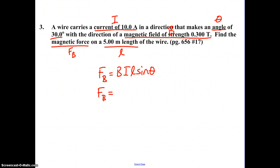So, we go ahead and we substitute B, 0.30, current, 10 amps, length, 5 meters, and the angle of orientation is 30 degrees. Pause this video if you need time to calculate, and the force of the current carrying wire in the existing magnetic field is found to be 7.50 N.